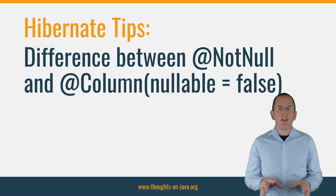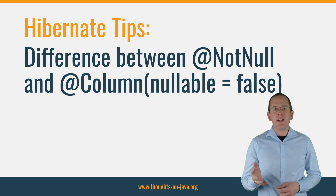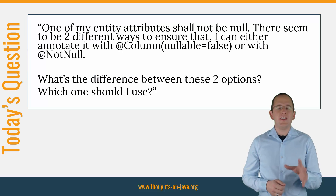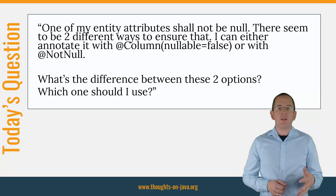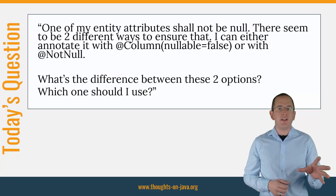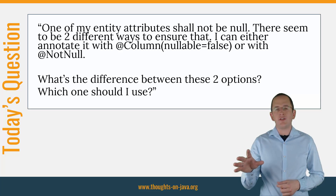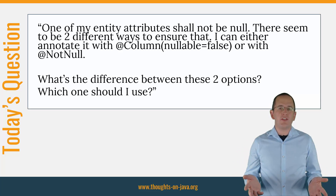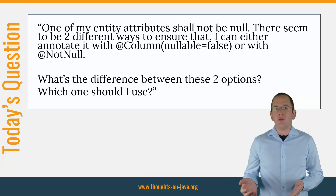But before we dive into the details of today's question, please subscribe and hit the bell icon to get a new Hibernate Tip video every week. Here's today's question: one of my entity attributes shall not be null. There seem to be two different ways to ensure that. I can either annotate it with a Column annotation and set nullable to false, or with a NotNull annotation. What's the difference between these two options? Which one should I use?